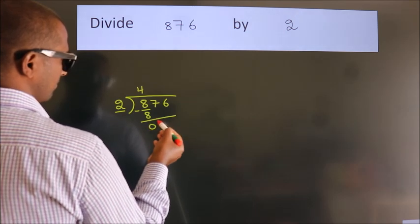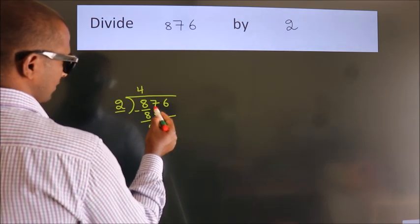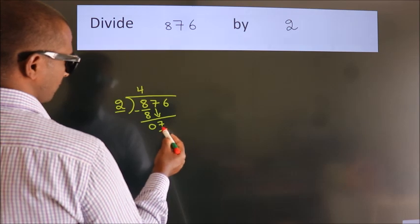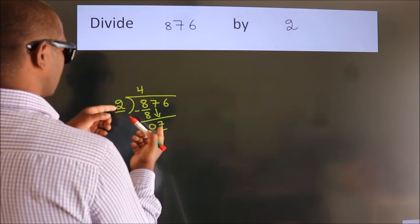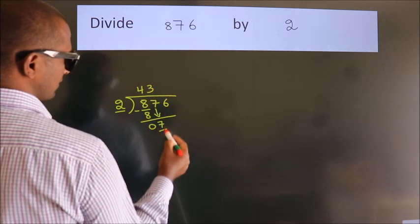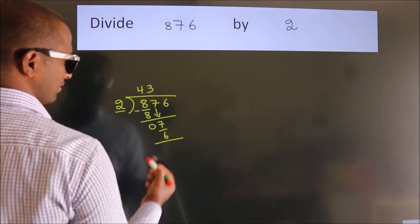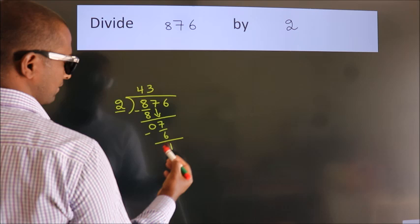After this, bring down the next number. So 7 down, so 7. A number close to 7 in the 2 table is 2 threes, 6. Now we subtract. We get 1.